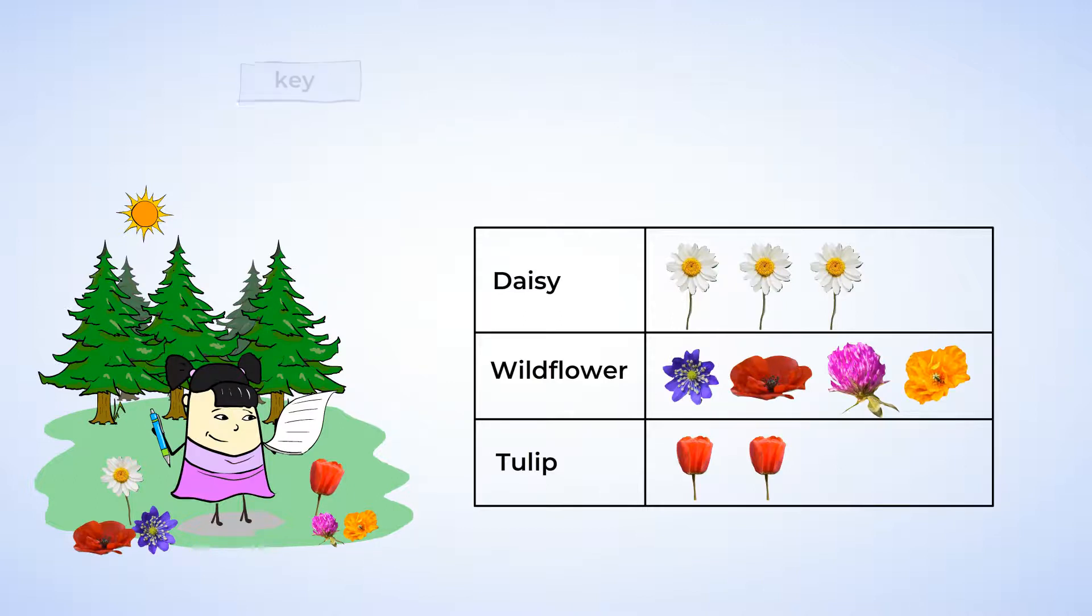First, Sue needs a key. Otherwise, we won't know what her symbols mean. To make a key, Sue is going to have to decide on one symbol. Right now, there is a different picture for daisies and tulips and a whole lot of different symbols in the wildflower row. Let's use just one picture of a flower. The key can show that one picture of a flower represents one flower that Sue saw.